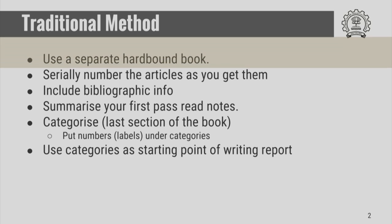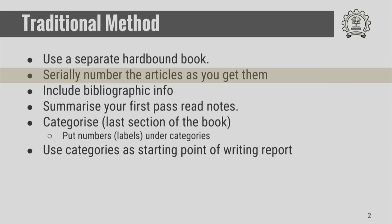First, we will look at the traditional method that most of us have been following for ages. This uses pen and paper, using a separate hard bound book for your literature. When you find a particular article or a book, you take it down and write them down in serially numbered articles in your book. Each article will have a unique number which is unique in your own sense.